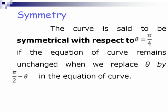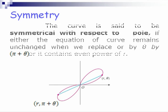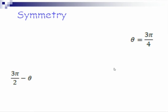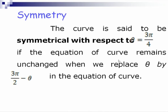The curve is said to be symmetrical with respect to the line θ=π/4 if the equation remains unchanged when we replace θ by π/2-θ. Similarly, symmetricity with respect to the line θ=3π/4 can be checked by replacing θ by 3π/2-θ in the equation of the curve.